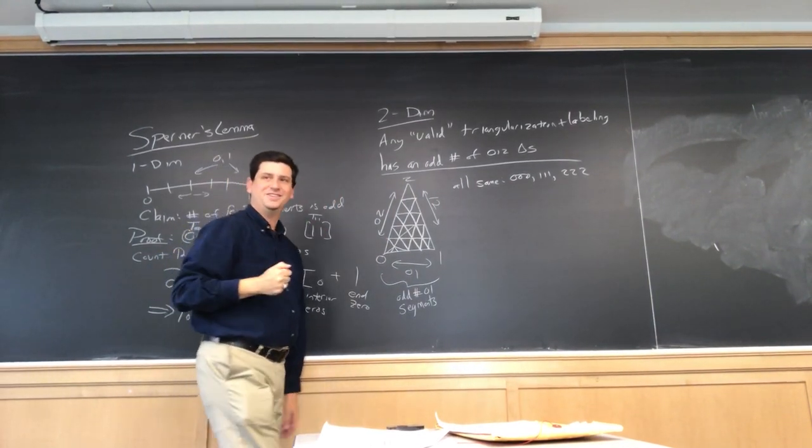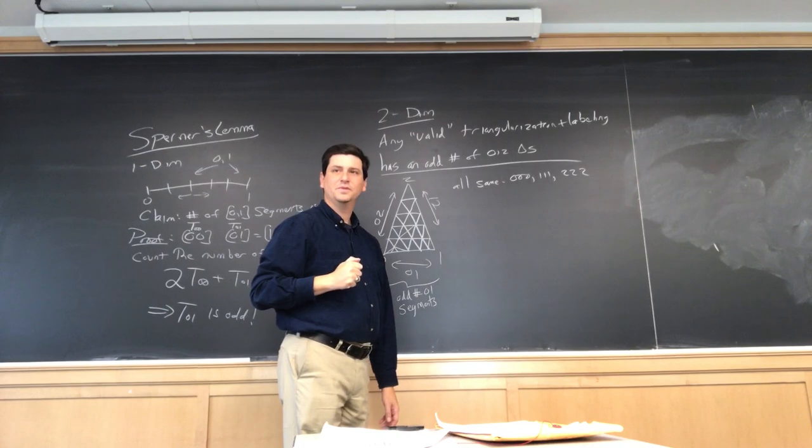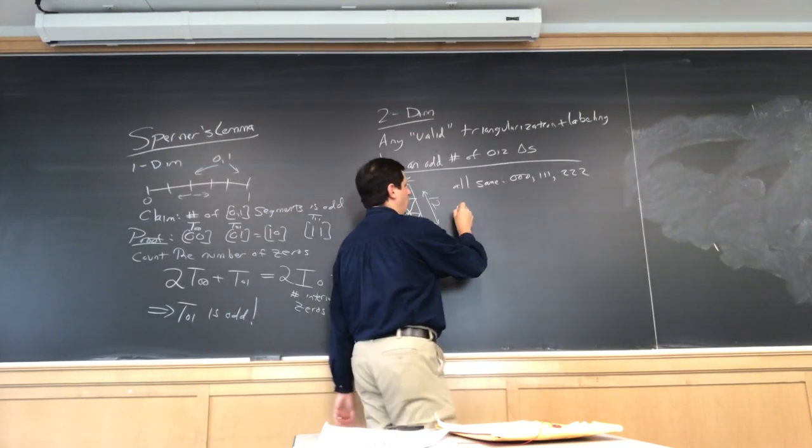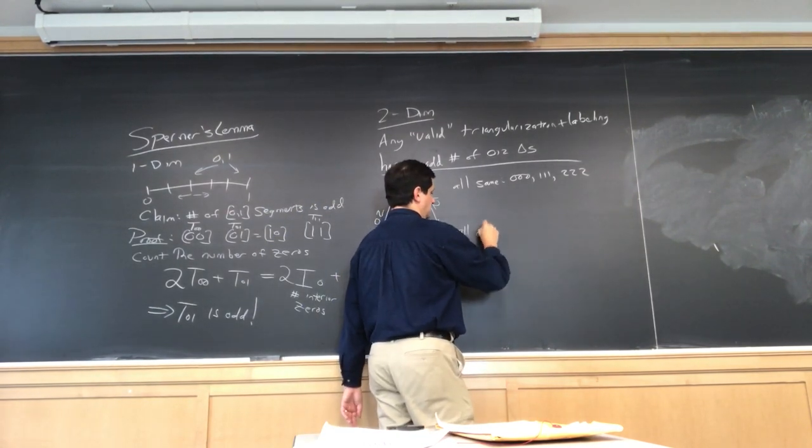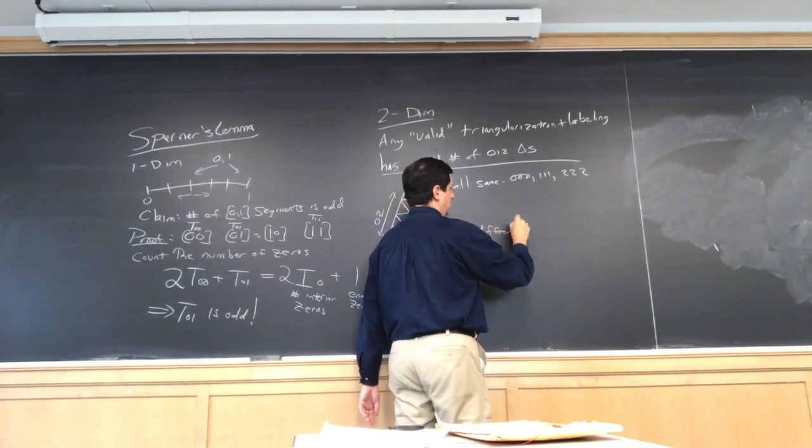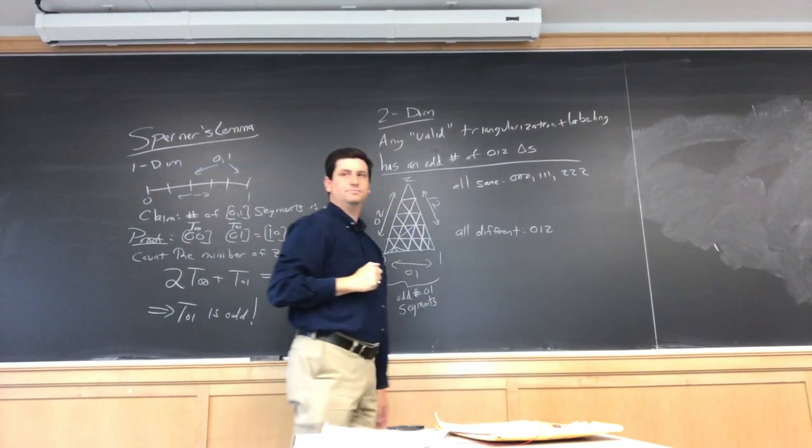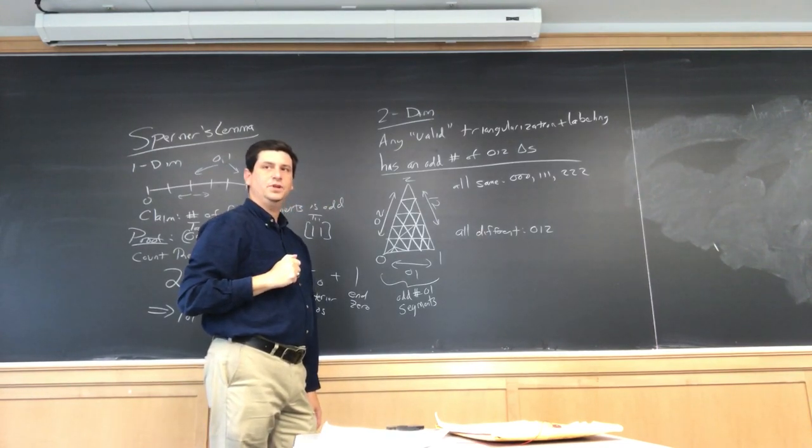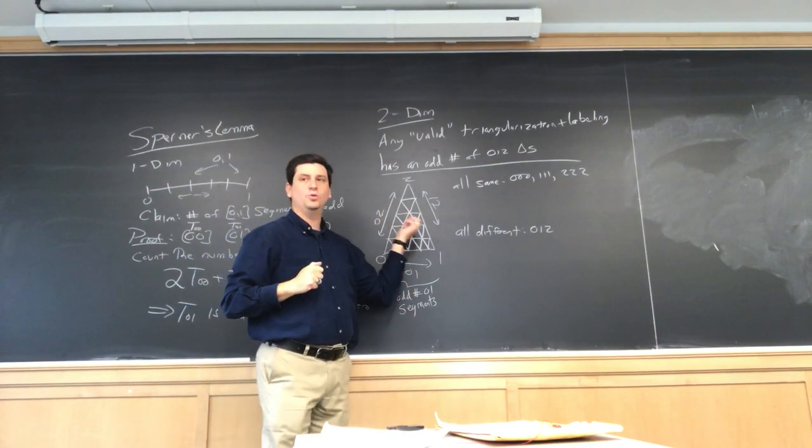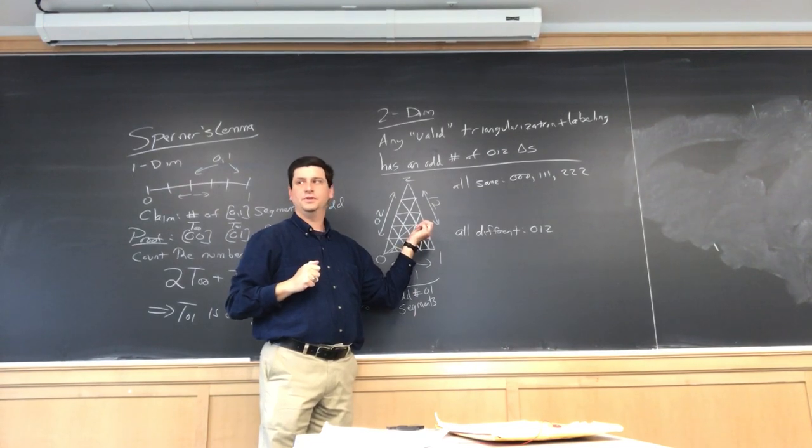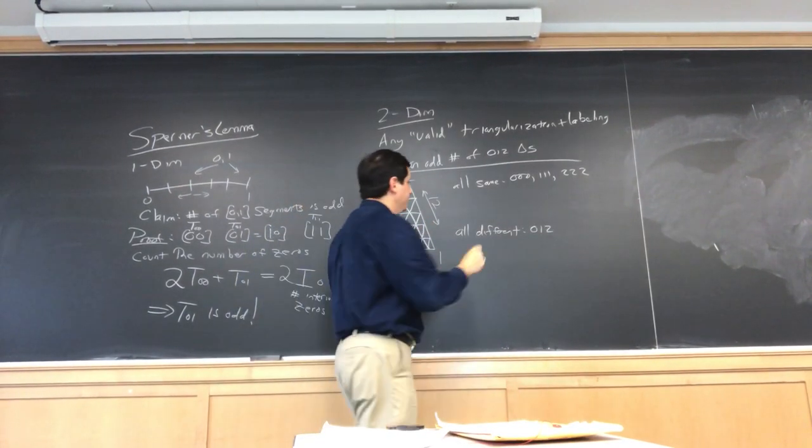Next. I would like to have 0, 1, 2, or 1, 2, 0. Okay, so all different. So, 0, 1, 2. But also, all different in the same order. Well, first, it's not going to really matter the order. You could have two the same in one different.